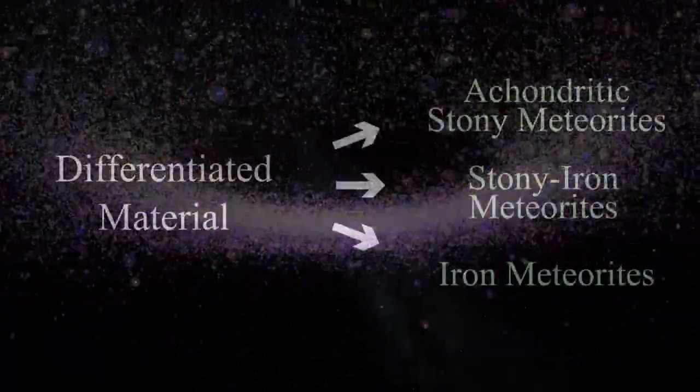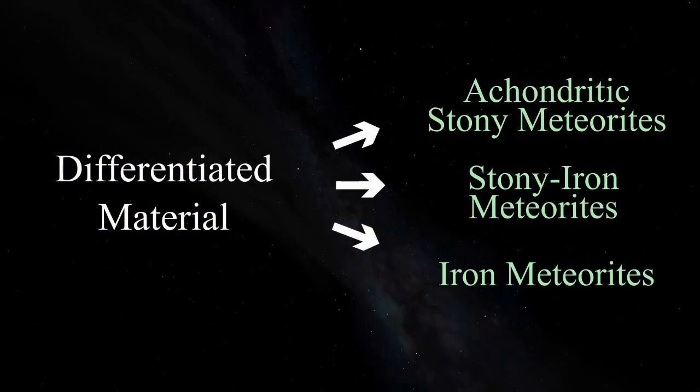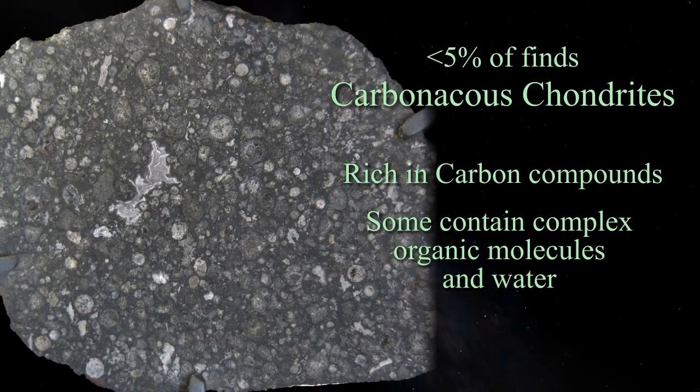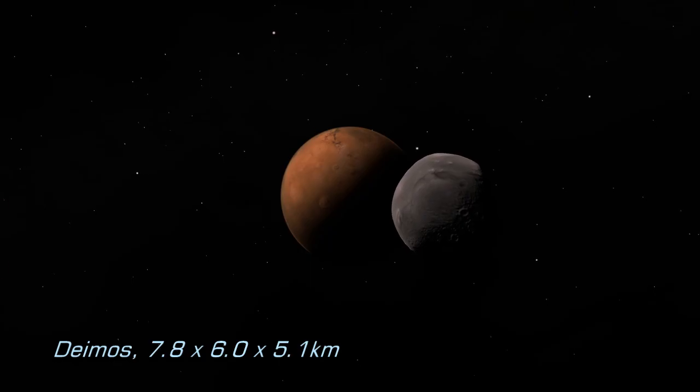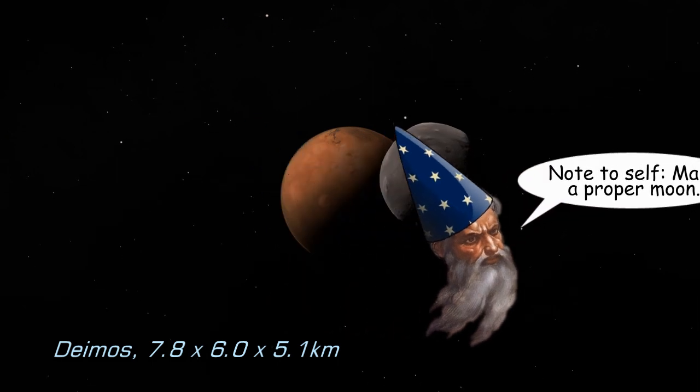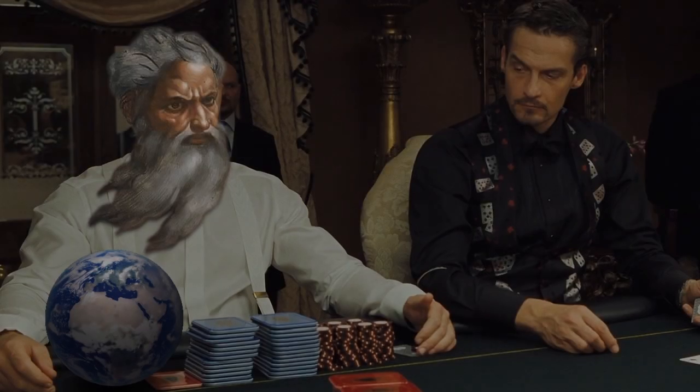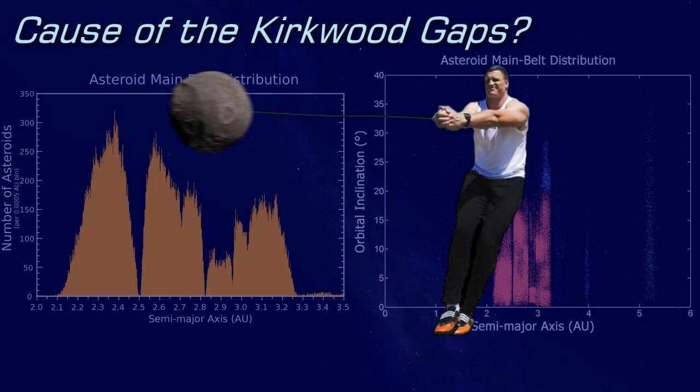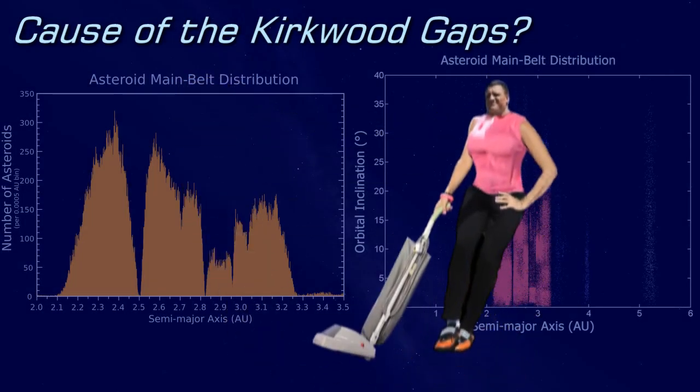We saw how achondrites, stony iron and iron meteorites are the result of collisions involving differentiated bodies, and that chondrites contain primitive material that hasn't endured high temperatures or differentiation. We found copious amounts of builder's rubble had been left lying around, unfinished moons of Mars, evidence of sky fairy gambling in the form of Earth crossing asteroids, and the possibility that Mr Space Hammerman has additional duties.